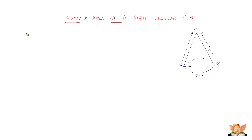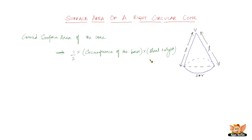The curved surface area of the cone is given by half into circumference of the base into the slant height. The height and the slant height are different — the slant height is the inclined side, and the height is the vertical measurement in the middle of the cone. The circumference of the base circle is 2πr and the slant height is l, so cancelling 2 and 2, we get πrl. This is the curved surface area.